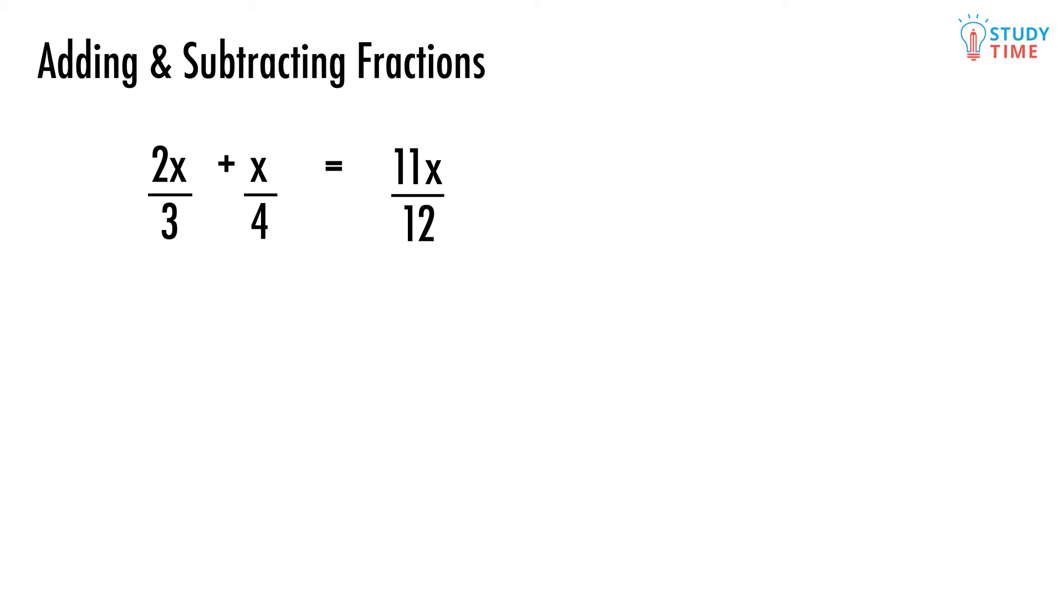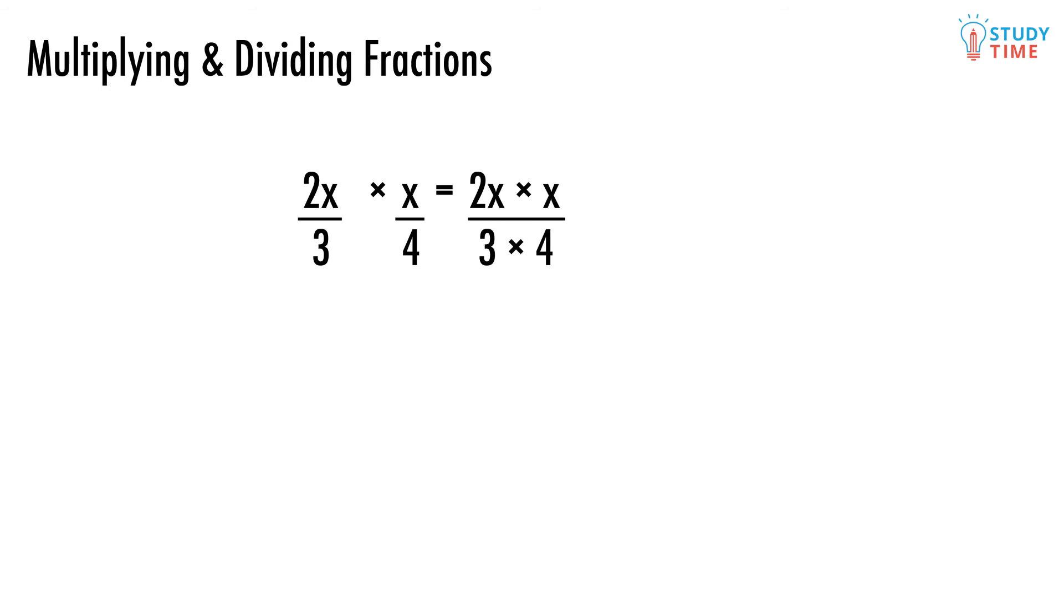Multiplying and dividing algebraic fractions is more straightforward. When we multiply two fractions, we simply multiply the numerators together and the denominators together. Up top we'll have 2x times x, which is 2xx. And we know that x times x is just x squared, so we write 2x squared, nice and neat.